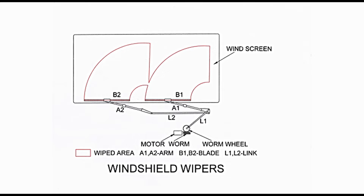Blades have a metallic frame with rubber lining that meets the glass surface. The windshield may have a double curvature, requiring long articulated blades with the ability to flex to the contour of the glass. Links are so designed that half rotation of the worm wheel causes movement of the blades in the clockwise direction, and the other half causes movement in the anticlockwise direction. The movement of both blades is in an arc, which covers a large area of the windshield, shown with a red line.